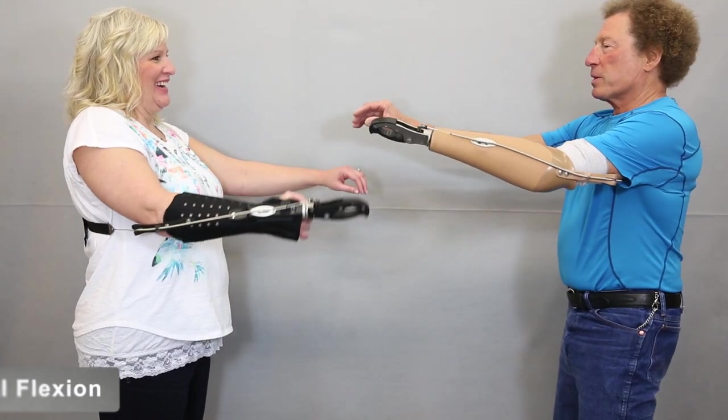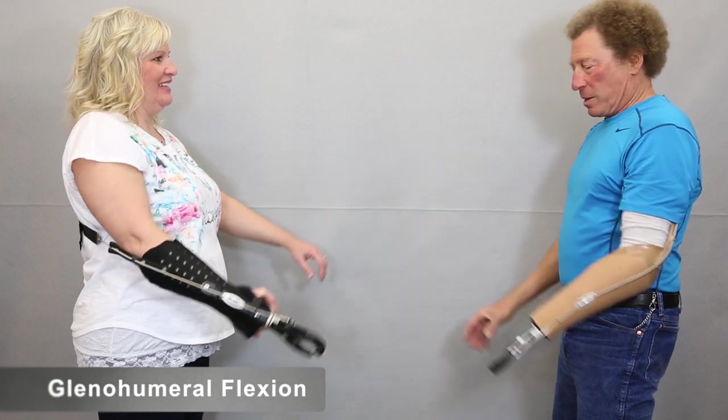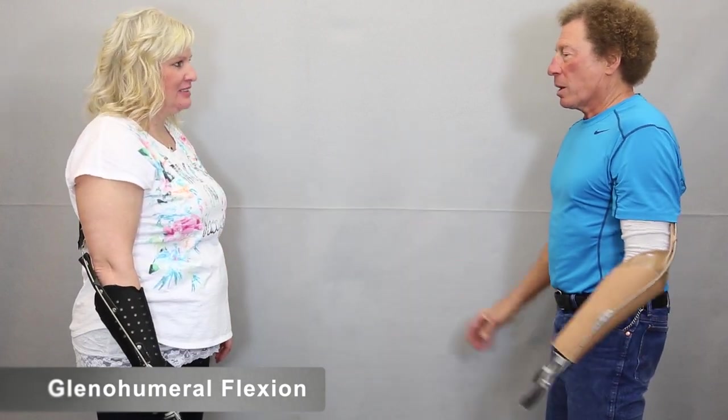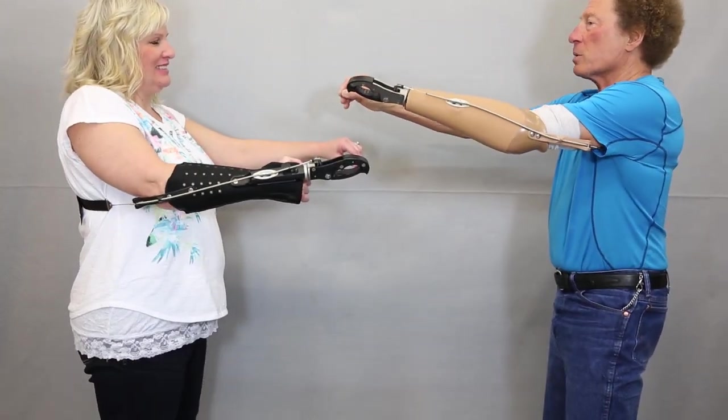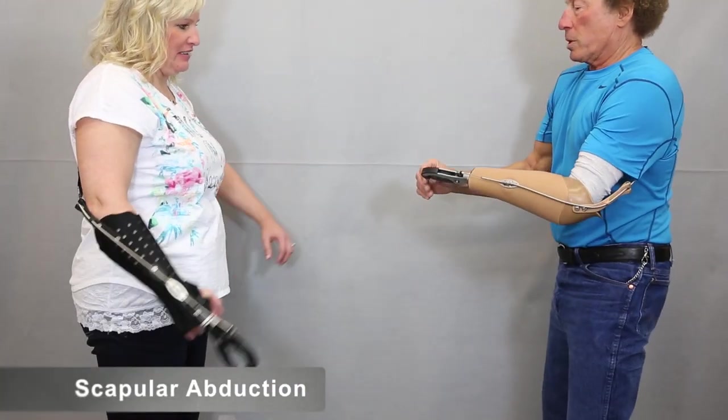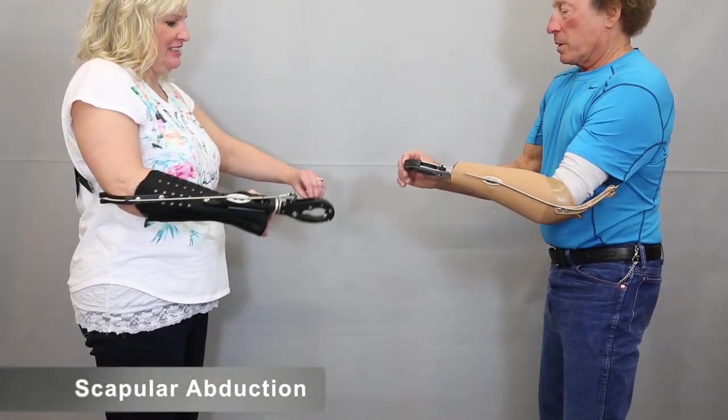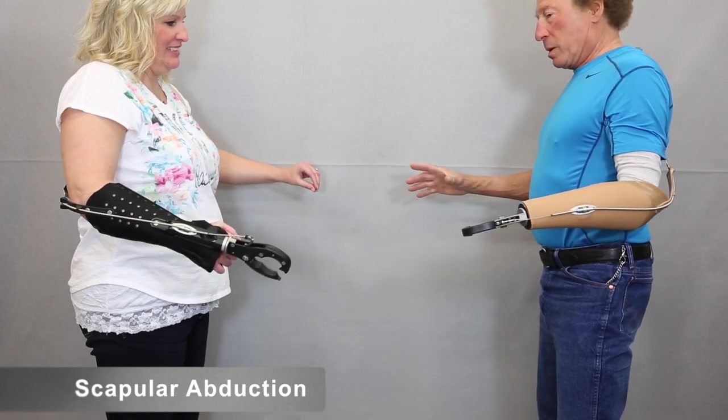These are the basic motions used to control the terminal device with a body-powered prosthesis. Glenohumeral flexion. Reaching forward with your arm fully extended creates excursion and increases cable tension. Unilateral or bilateral scapular abduction, shoulder rounding, creates excursion and increases cable tension.